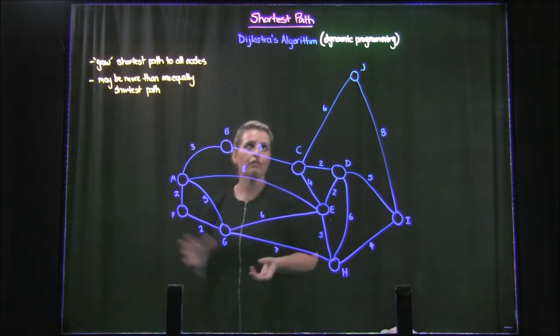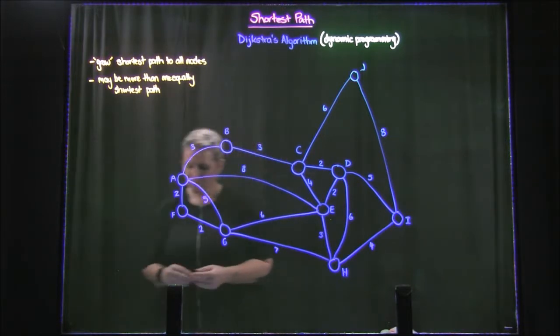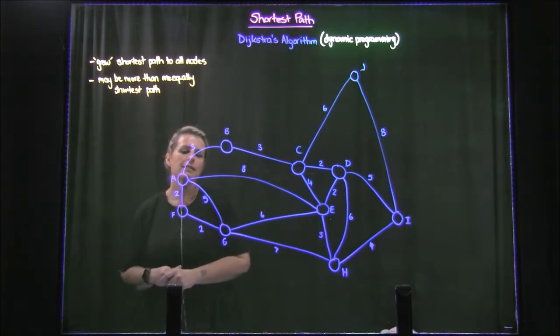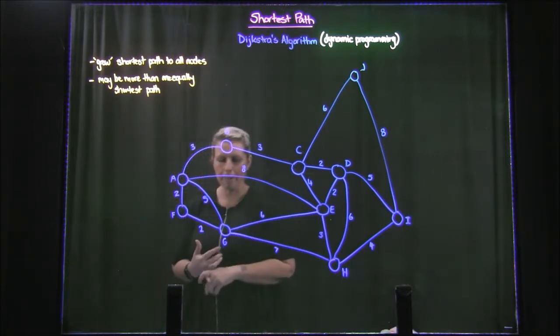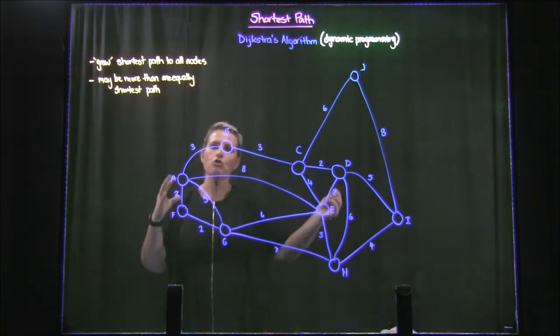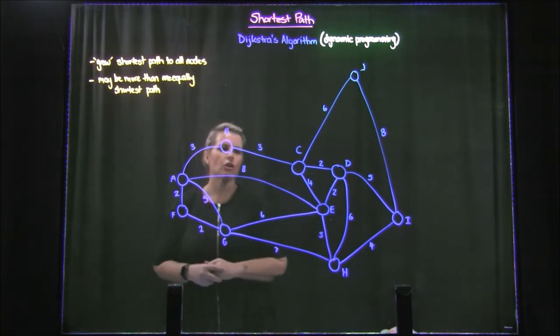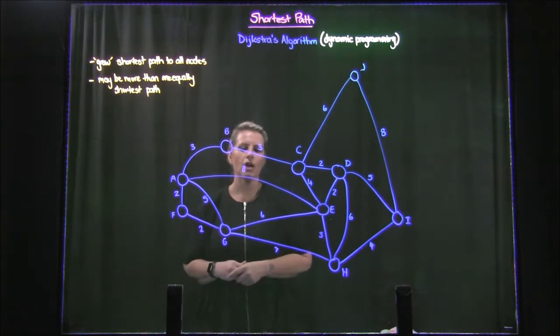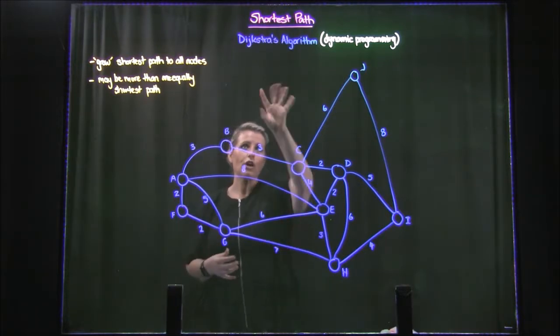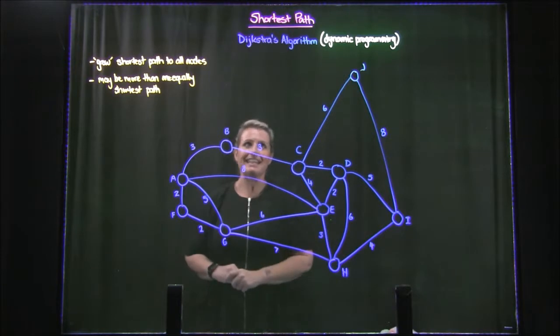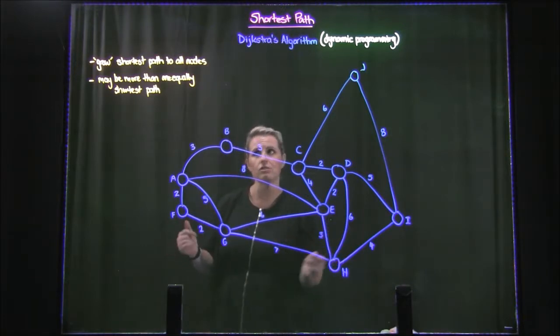So the shortest path, basically there are a lot of different algorithms that are used in order to figure out the shortest path in a network. This can be really handy because we can model things like project management using a network and knowing the shortest path within that can be quite handy. So there are lots of real-world applications for this. Dijkstra's algorithm, often called dynamic programming, is one of the best and it is the one that we're going to work through today.